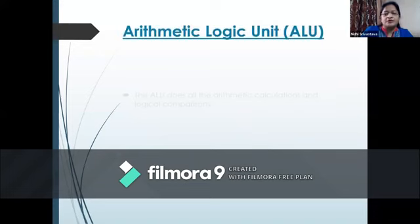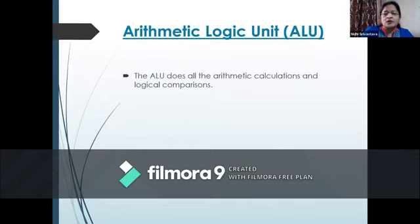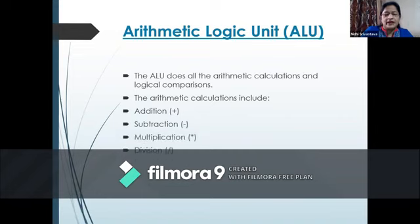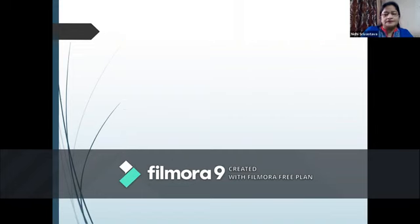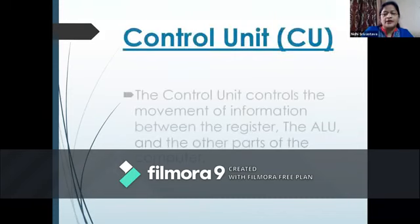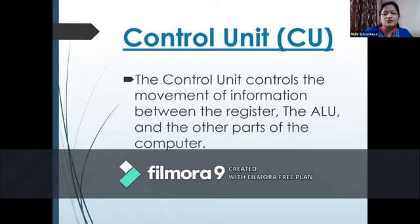Arithmetic Logic Unit (ALU). The ALU does all the arithmetic calculations and logical comparisons. The arithmetic calculations include addition, subtraction, multiplication, division, etc. Control Unit (CU). The control unit controls the movement of information between the register, the ALU and the other parts of the computer.